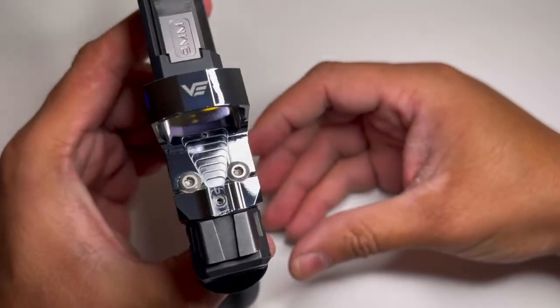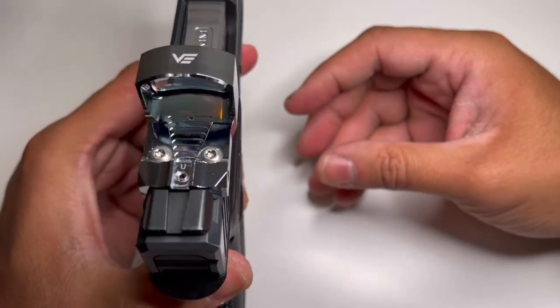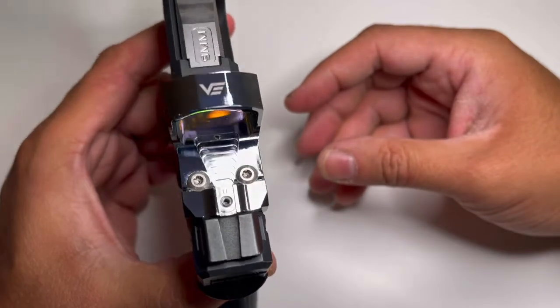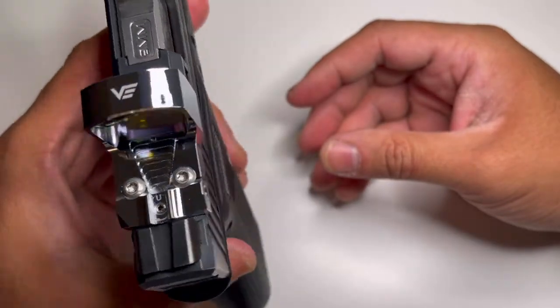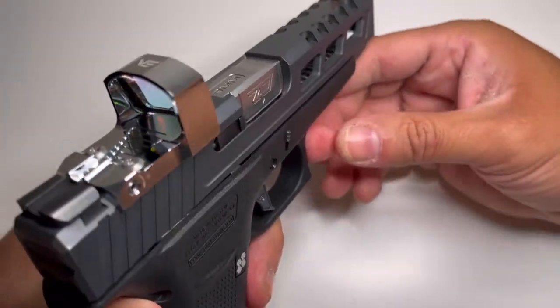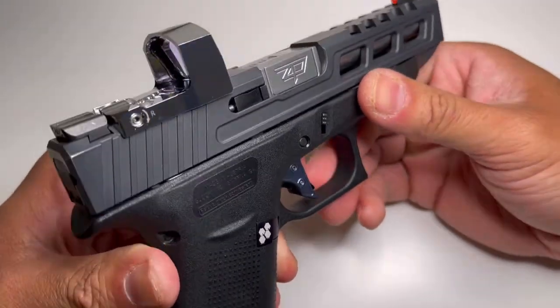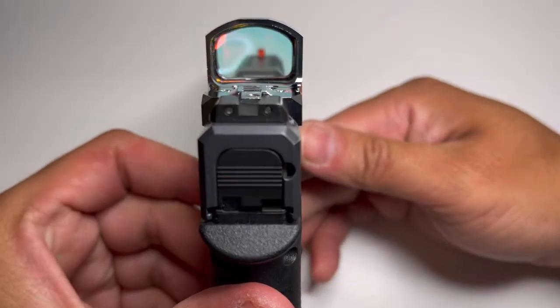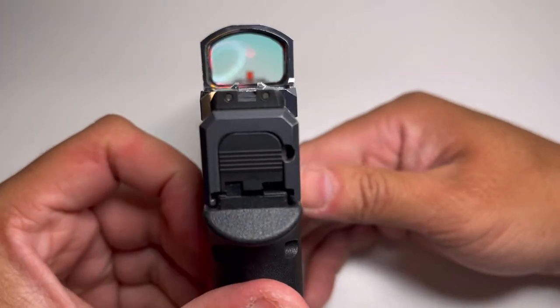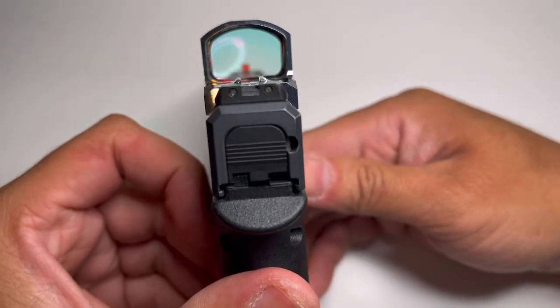So again, this is a very similar build to the other auto brightness model, the 52, as well as the manual version SCRD-43. This is just the chrome plated version. You still get that 17 millimeter window on there.